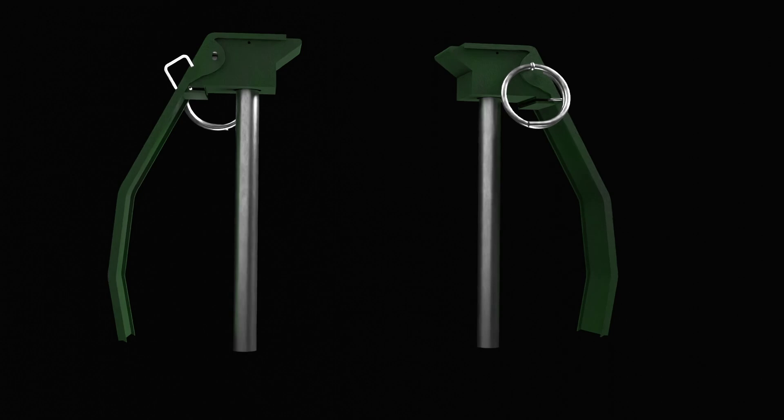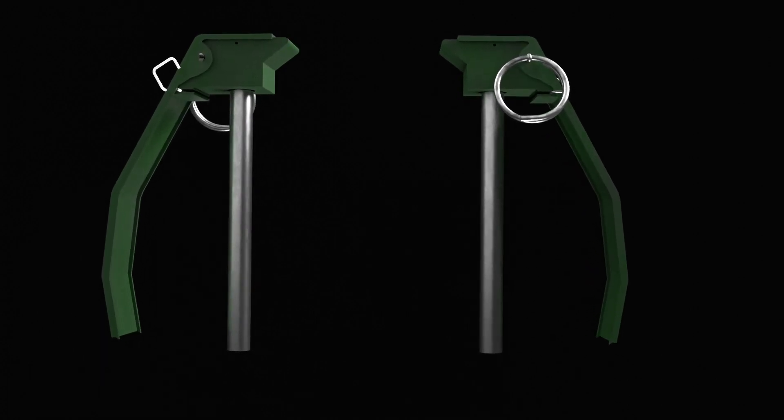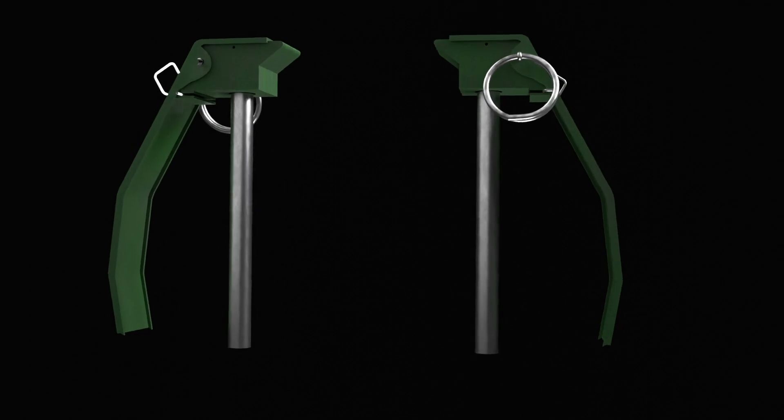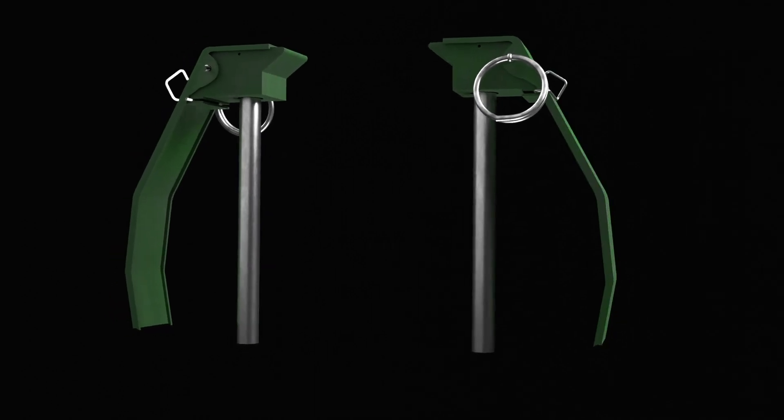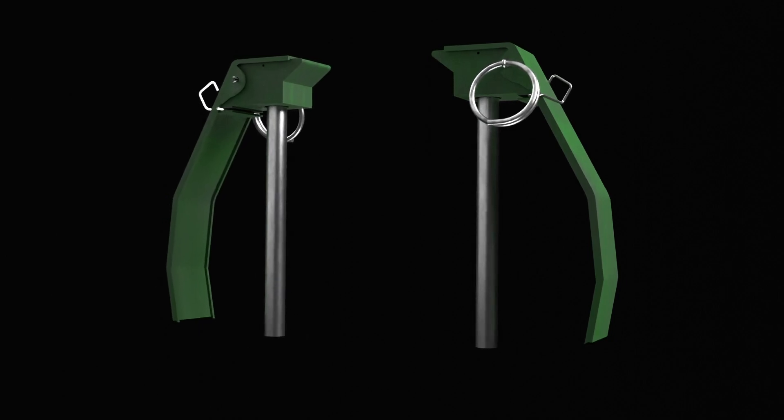The impact fuse triggers the explosion upon colliding with a hard surface. On the other hand, the time-delayed fuse allows the user to throw the grenade and retreat to a safe distance before it detonates.